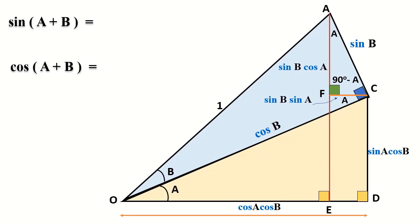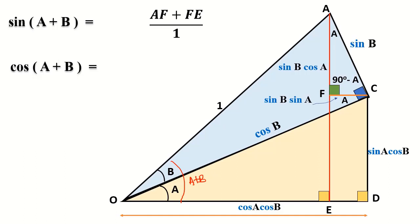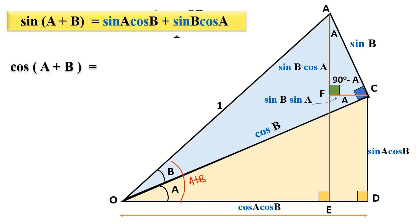We are now ready to give our proof. Look at triangle OAE — the angle here is A plus B. So we have sine of A plus B equals AE over 1. Since AE equals AF plus FE, we will have sine B cosine A plus sine A multiplied with cosine B. Rearranging the order of multiplication, we have proved our first formula: sine of A plus B equals sine A cosine B plus cosine A sine B.